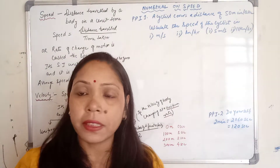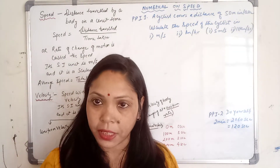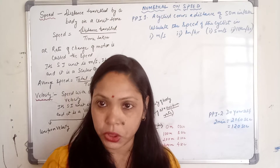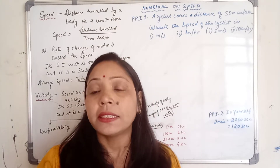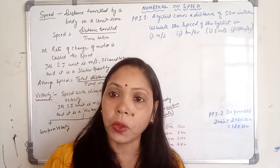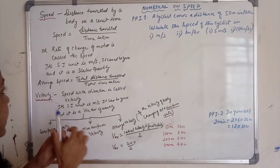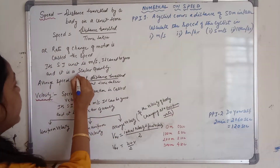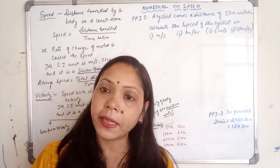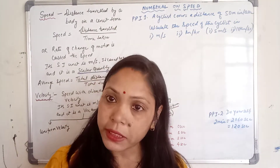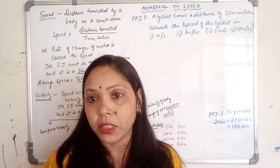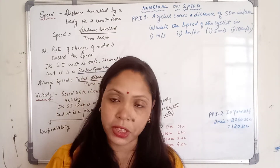Speed does not have any direction. It has only magnitude. Since it has only magnitude, it is considered as a scalar quantity. Because scalar quantities are the quantities which have only magnitude, no direction.